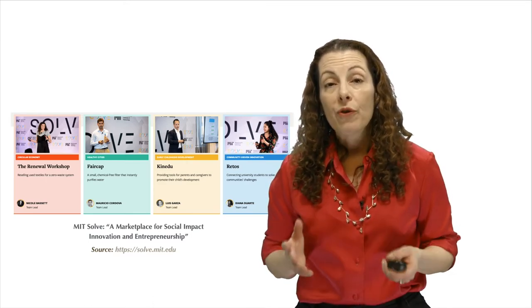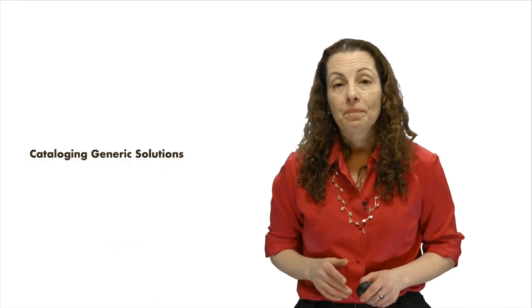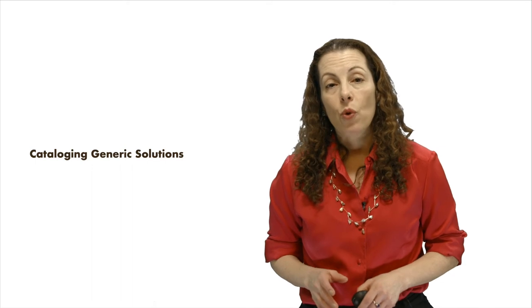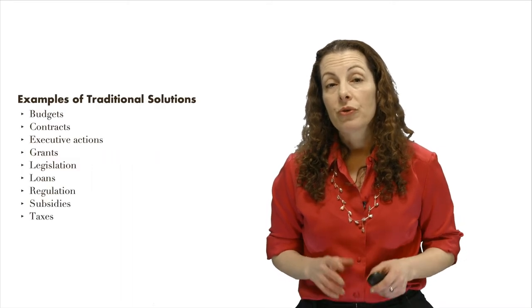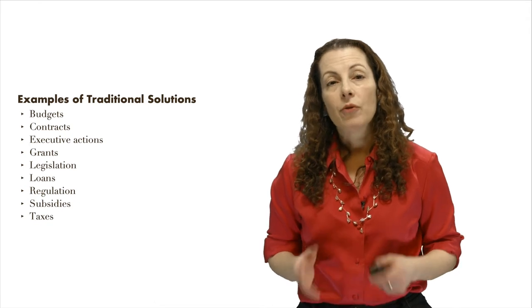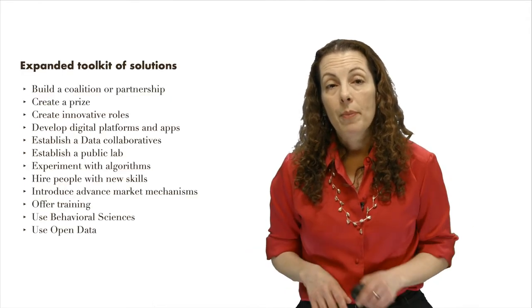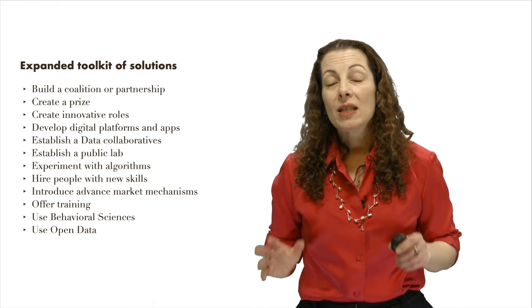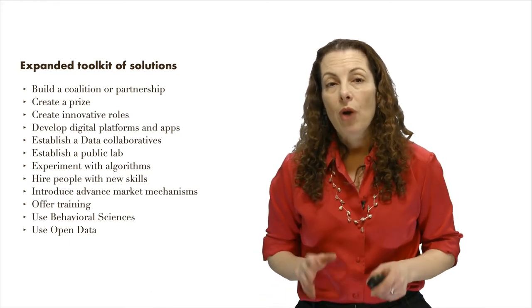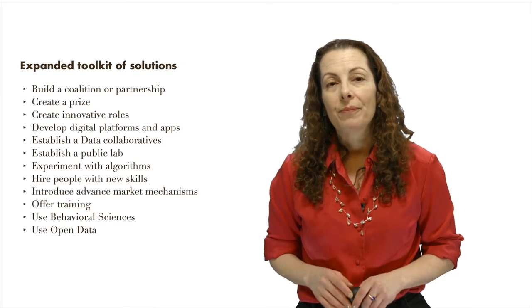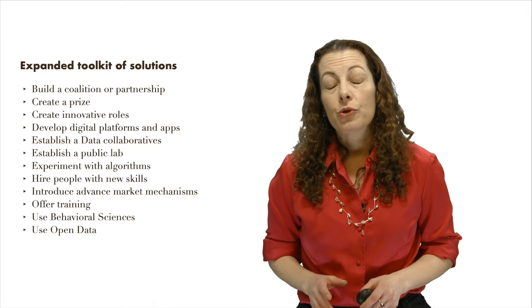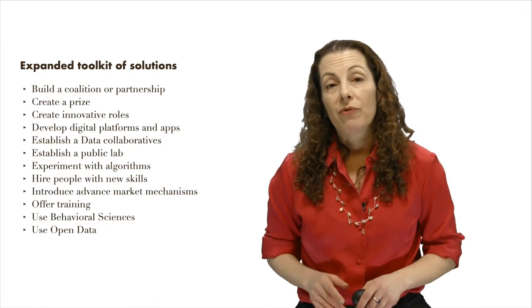So, how to find out what else is out there? Solutions for solving public problems come in many forms. These include, of course, the traditional government abilities to tax, regulate, spend, and deliver public services. But the toolkit of the public entrepreneur is an expanded toolkit of solutions. Review these lists to see if there's a promising approach that you had not considered. For more detail on these novel approaches, see our next module on expanding your toolkit for change.